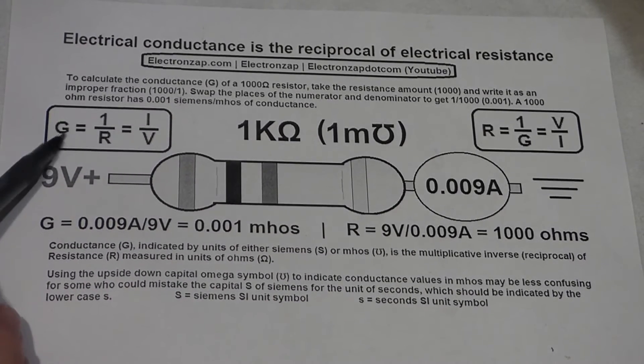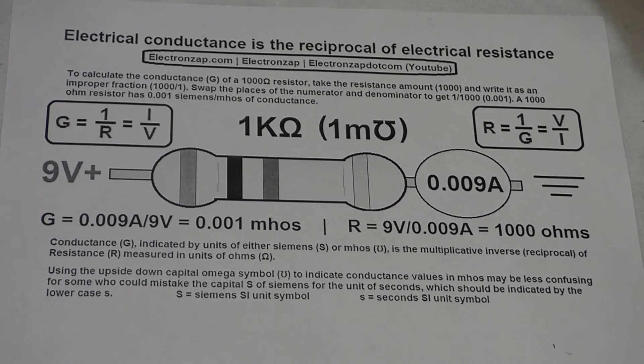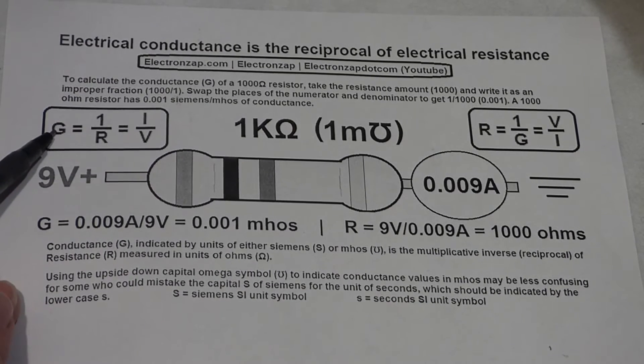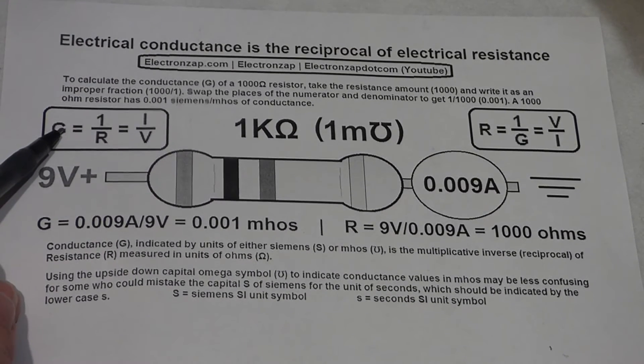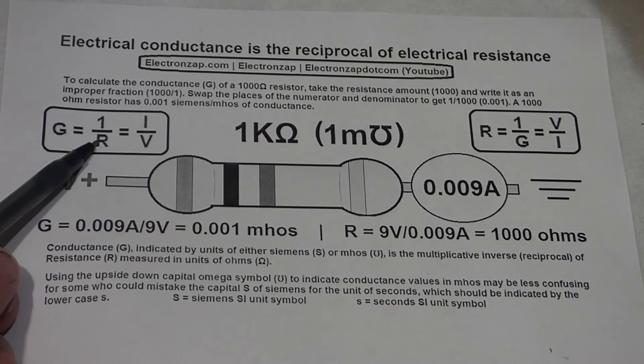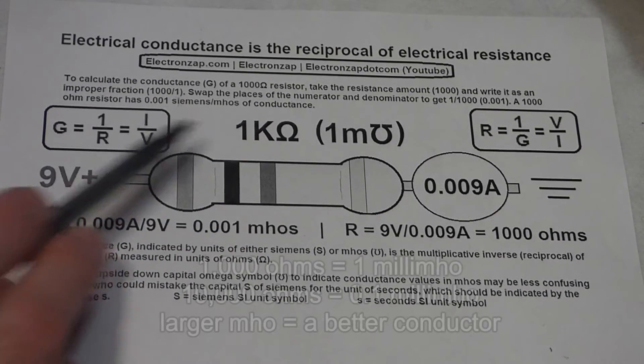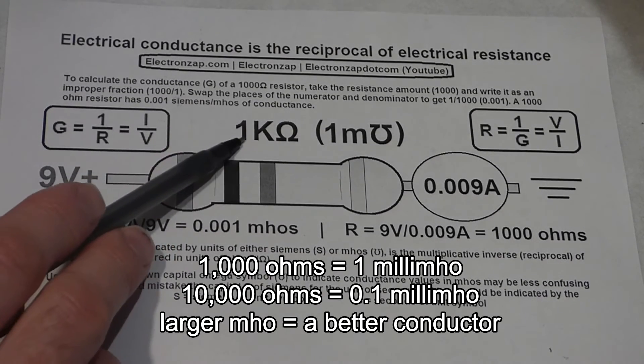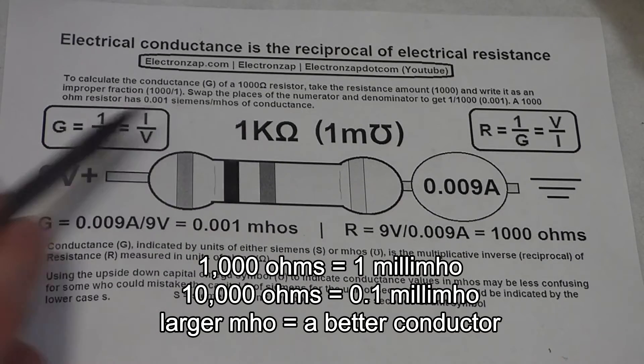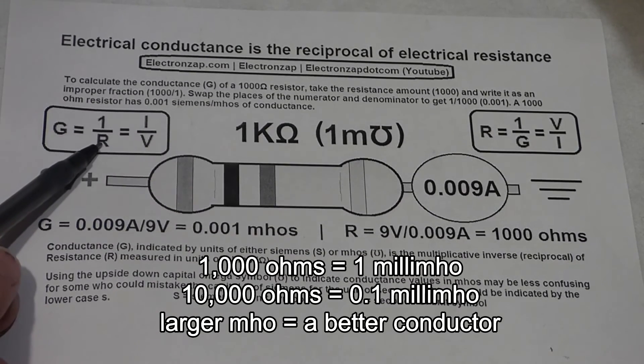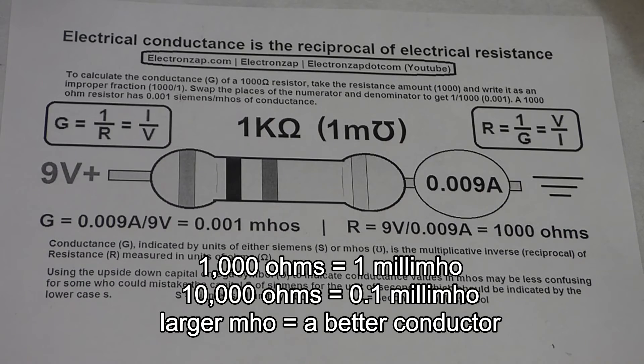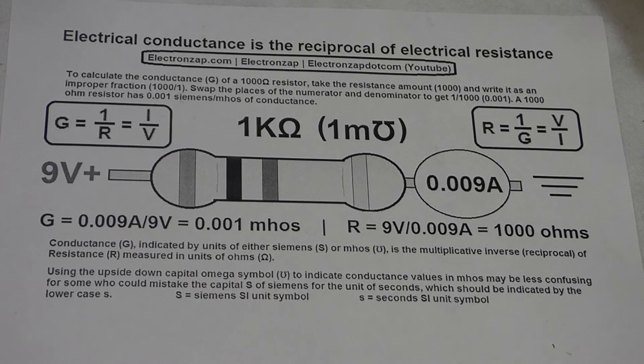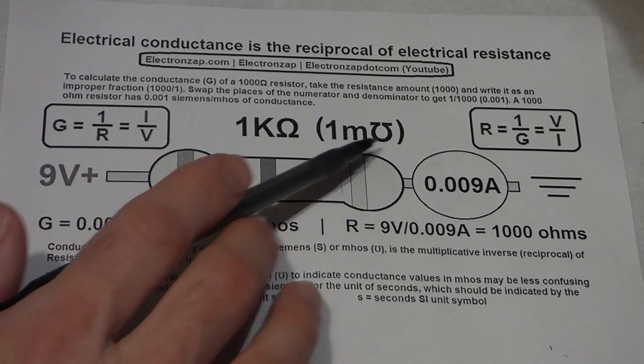They use the letter G to indicate conductance. Conductance is 1 over the resistance. So this is a 1 kiloohm resistor, that's 1,000 ohms. If you take 1 and divide it by 1,000, you get 0.001 Mhos. So 1 millimho.